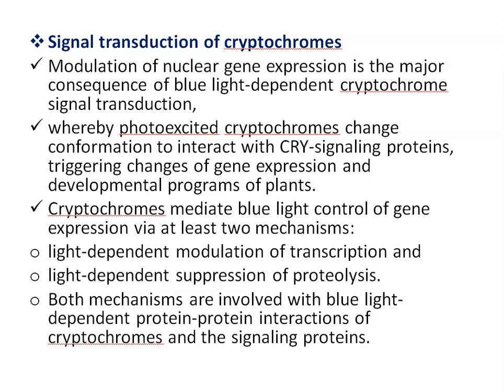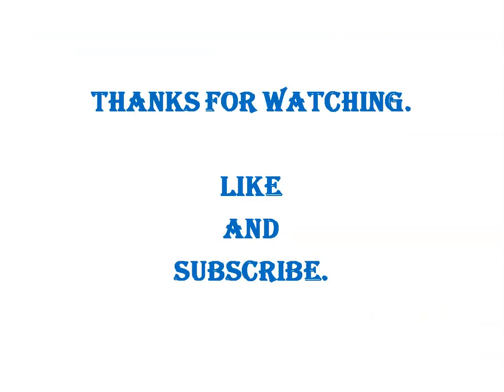For signal transduction, modulation of nuclear gene expression is the major consequence of blue light-dependent cryptochrome signal transduction. Photo-excited cryptochromes change conformation to interact with CRY signaling proteins, triggering changes of gene expression and developmental programs of plants. Cryptochromes mediate blue light control of gene expression via at least two mechanisms: light-dependent modulation of transcription, and light-dependent suppression of proteolysis. Both mechanisms involve blue light-dependent protein-protein interactions between cryptochromes and their signaling proteins. This concludes the topic of cryptochromes — structure, function, and mechanisms of action.